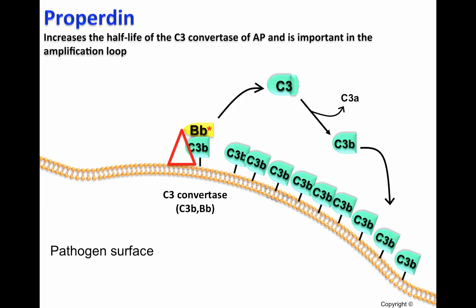Each C3b molecule that is deposited on the cell surface can be used to generate more C3 convertases. Properdin will be able to bind to these C3 convertases and participate in the process of amplification of the alternative pathway or amplification loop.